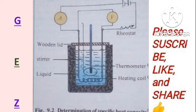When you switch on the current, after measuring the initial temperature, you let the current flow for about three minutes. The liquid should be stirred while heated, and the final temperature is read after the current is switched off. The specific heat capacity of the liquid is calculated using the same formula, but you need to know the final and initial temperatures.